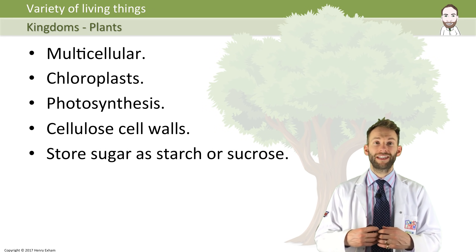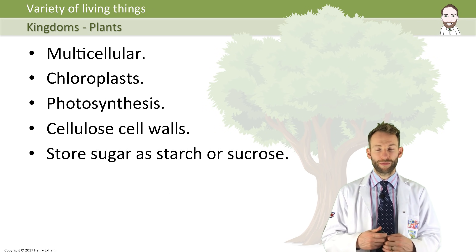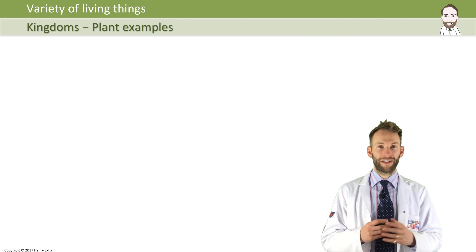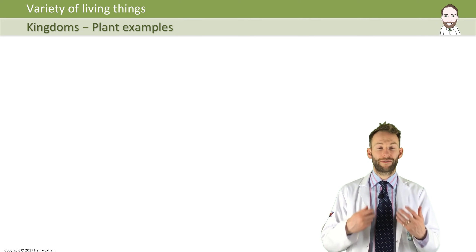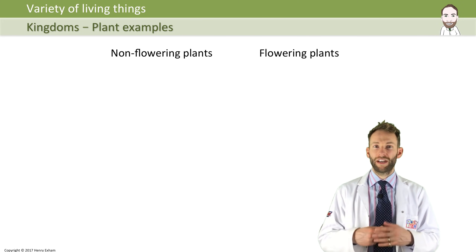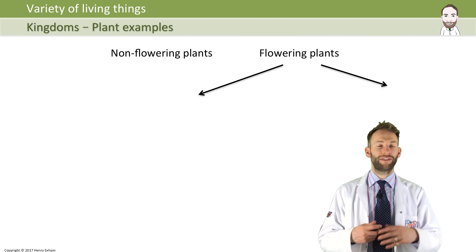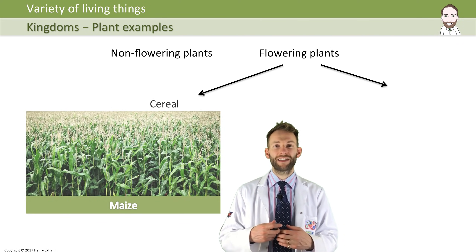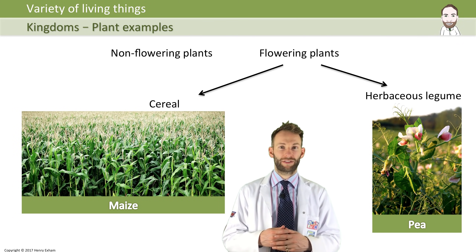You can further classify plants into smaller and smaller subgroups, but one of the biggest determining factors about what group a plant fits into is whether it flowers or not. There are all different types of farm plants — things like cereals such as maize, or herbaceous legumes like pea plants.